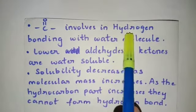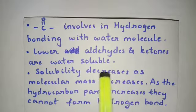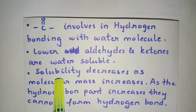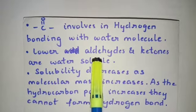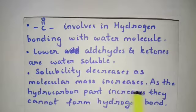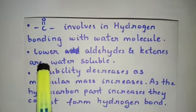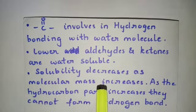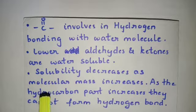Because of this hydrogen bonding, we can claim that the lower aldehydes and ketones are water soluble — that means aldehydes and ketones with fewer carbon atoms. Solubility decreases as molecular mass increases. As you move to higher aldehydes and ketones, that is as the number of alkyl groups increases, the solubility decreases. As the hydrocarbon part increases, they cannot form hydrogen bonds, making hydrogen bonding more difficult.